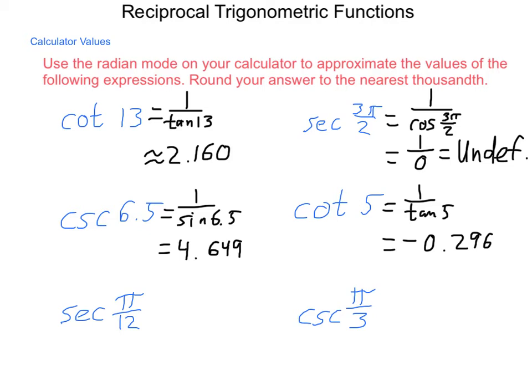The secant of π twelfths is 1 over the cosine of π twelfths, which to the nearest thousandth is 1.035.